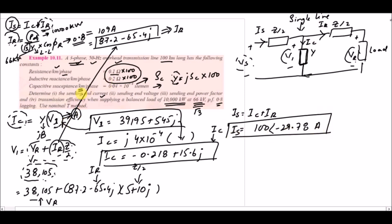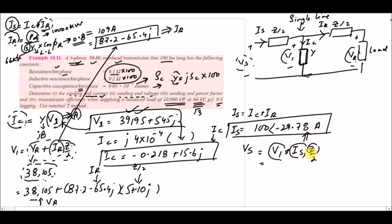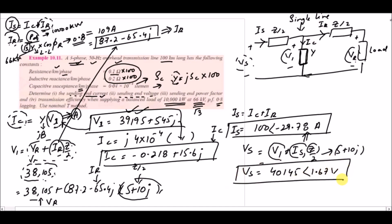In the second part, we calculate the sending end voltage. From the circuit, Vs = V1 + Is·(Z/2). V1 is the previously computed value, Is = 100∠−29.78° A, and Z/2 = 5 + j10 ohm as calculated earlier.